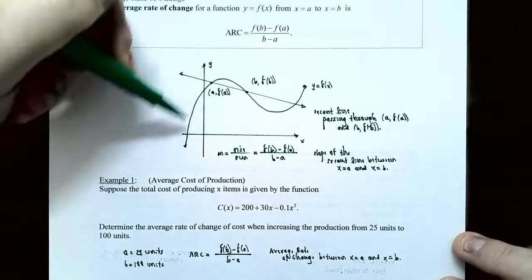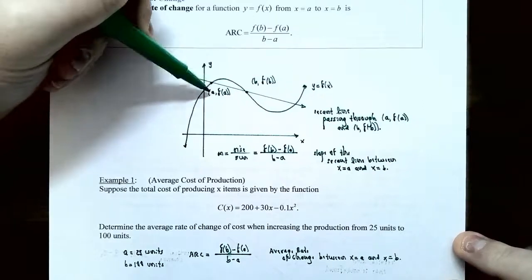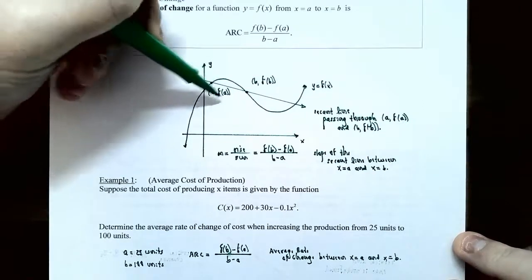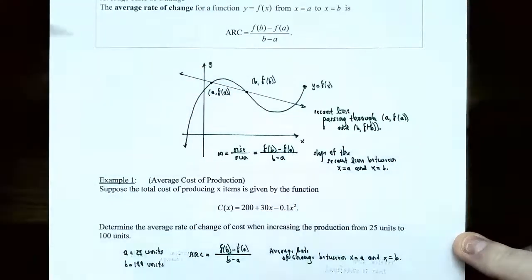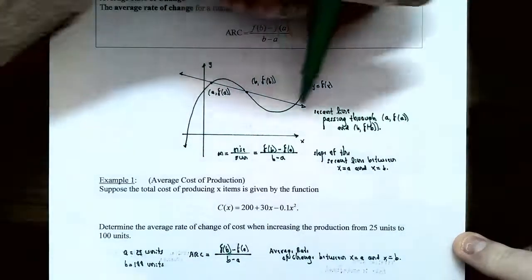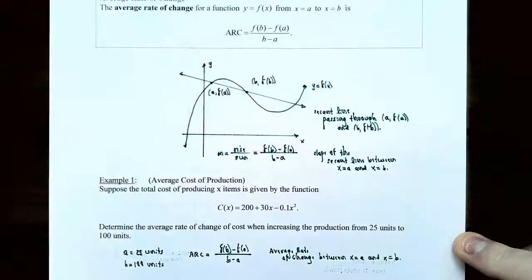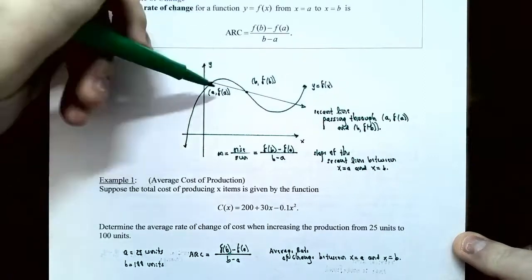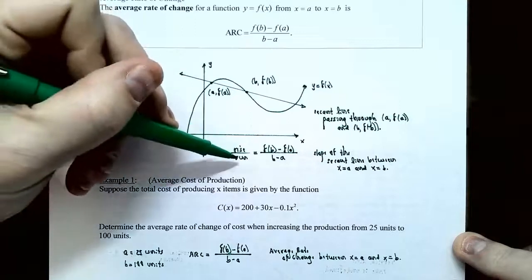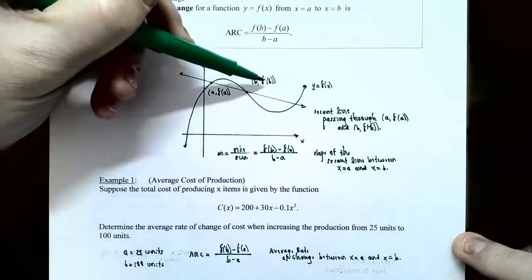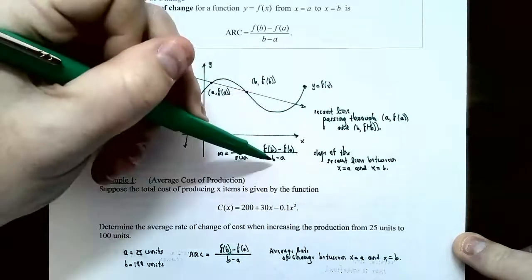Looking at the graph of a general curve y equals f of x, you have two points on the curve: a comma f of a, that's x1, y1, and b comma f of b, that's x2, y2. If you connect these two points with a line, that's called the secant line passing through a comma f of a and b comma f of b. The slope of this line — rise divided by run, f(b) minus f(a) divided by b minus a — is called the average rate of change.